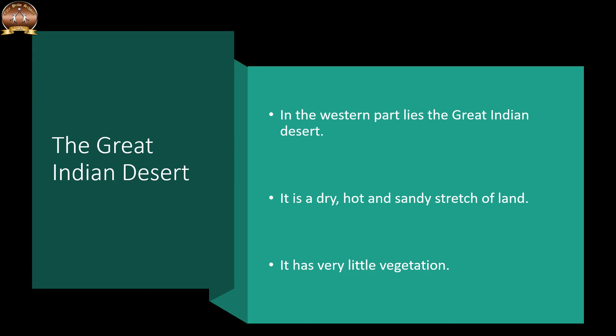The Great Indian Desert lies in the western part of India. It is a dry, hot and sandy stretch of land with very little vegetation.